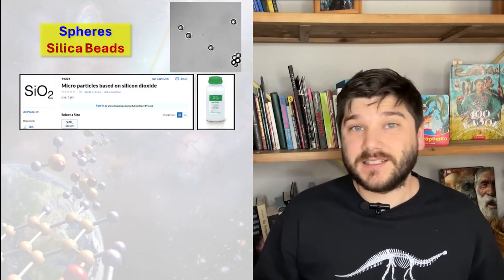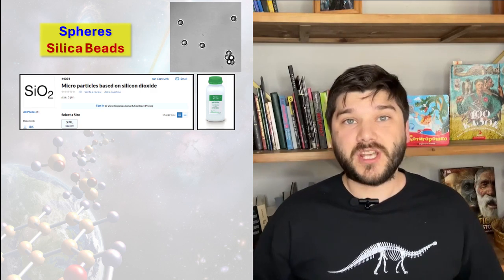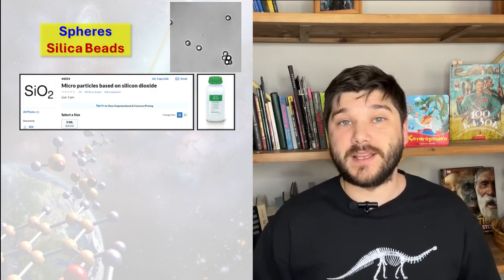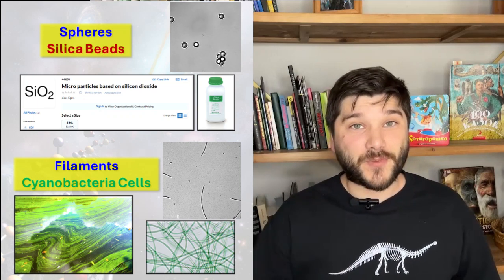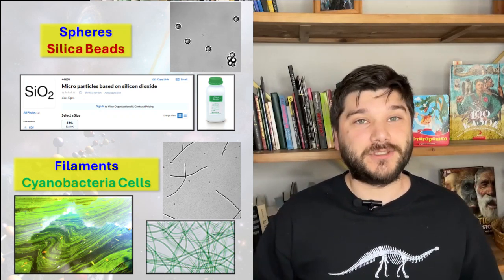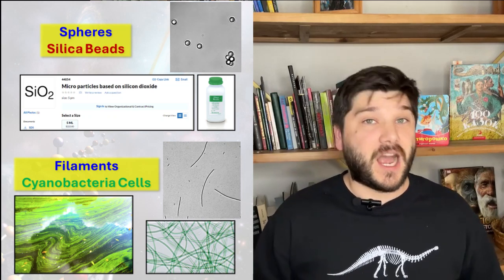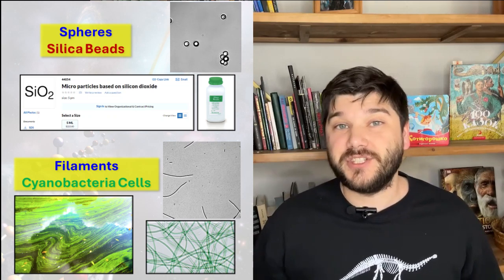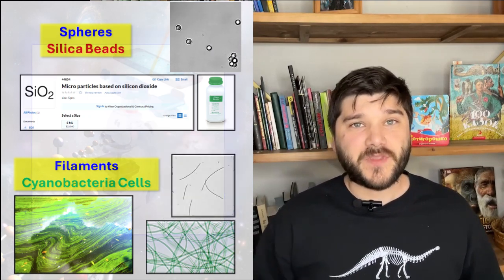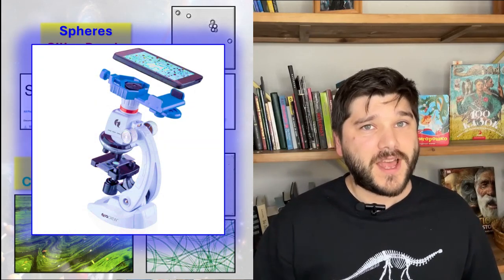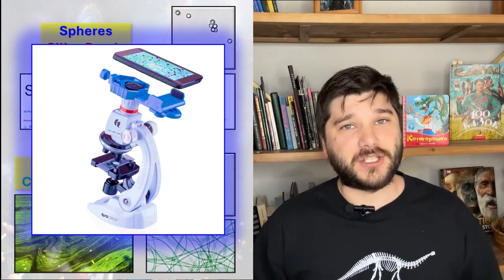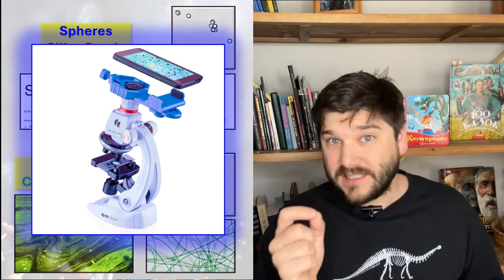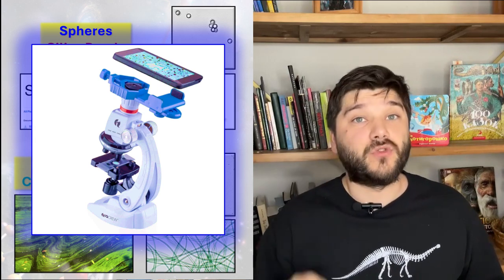Spoiler — these two particles are not alien. I do not have resources to go to Mars yet and to collect Martian soil. They are pretty much Earth material. Spheres are silica beads, non-living matter, which can be purchased from any scientific product supplier. And the filaments are cyanobacteria, living cells, which can be found in any freshwater lake and pond. I worked with both types of particles during my PhD. They are easy and inexpensive to purchase. So, if you have a small microscope at home, you can get these particles and check my calculations, because it is always important in science to run an experiment yourself to verify the results.